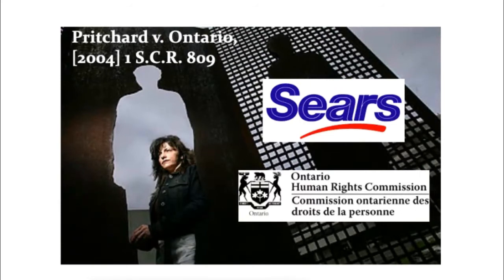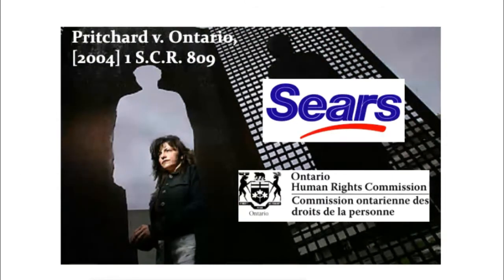Solicitor-client privilege has a quasi-constitutional status, as this next case explains. One tricky thing about this case is that it's technically an administrative law case, but it remains the leading Supreme Court of Canada authority for solicitor-client privilege in civil litigation as well as the administrative context. What happened to Colleen Pritchard? She filed a human rights complaint against her employer for harassment and gender discrimination. The Human Rights Commission decided they didn't want to deal with her complaint, and she appealed, wanting to see everything the commission had considered.